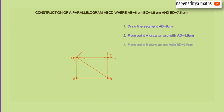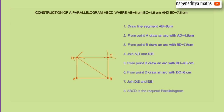Steps of construction: Draw line segment AB equal to 6 centimeters. From point A draw an arc with AD equal to 4.5 centimeters. From point B draw an arc with BD equal to 7.5 centimeters. Join A, D and D, B. From point B draw an arc with BC equal to 4.5 centimeters. From point D draw an arc with DC equal to 6 centimeters. Join D and C, and B and C. ABCD is the required parallelogram.